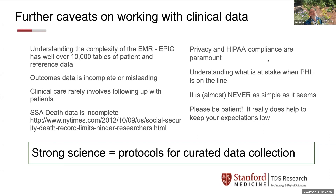If a patient sadly dies while in our care, the medical record system will reflect that. If they die after they've been seen by one of our clinicians, we might hear about it, or we might not. We have data from the Social Security Administration that tells us about some of our patients, but the data is incomplete and we can only use it if we can successfully match patient identities. And more and more, we don't even know the Social Security number of our patients. Privacy and compliance are paramount. As they say: it helps to keep your expectations low.